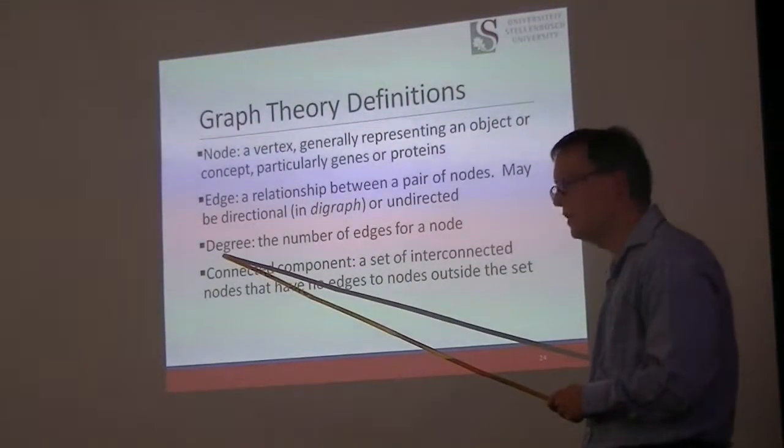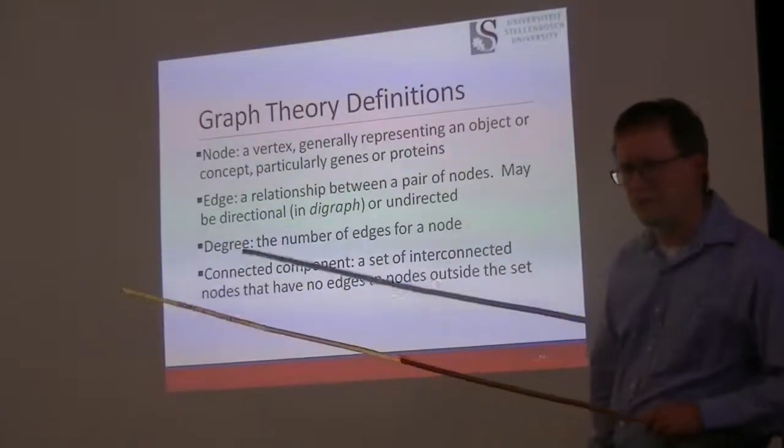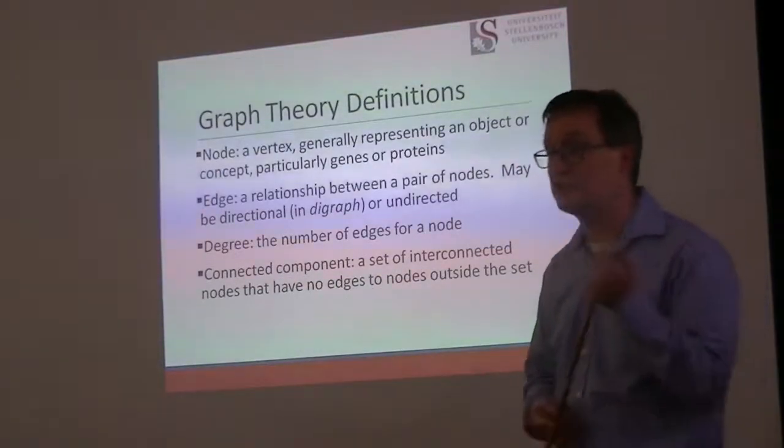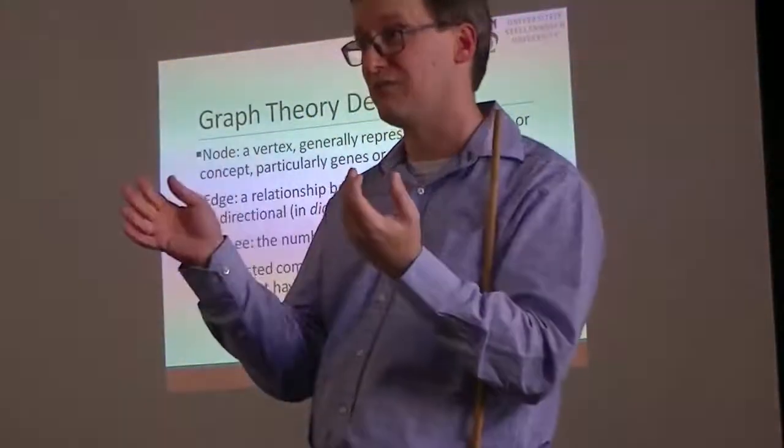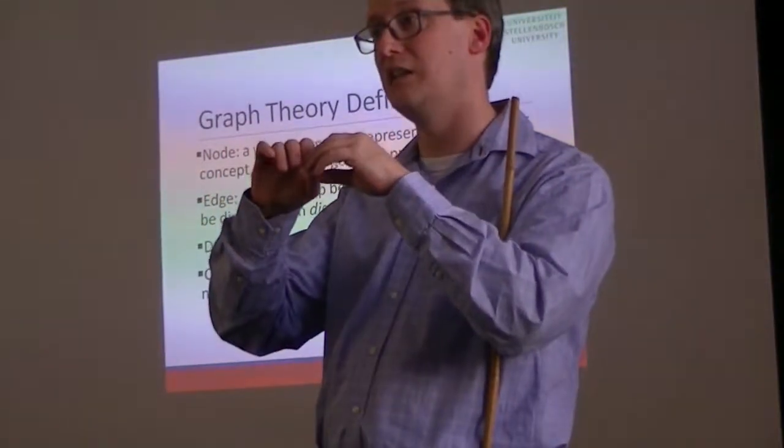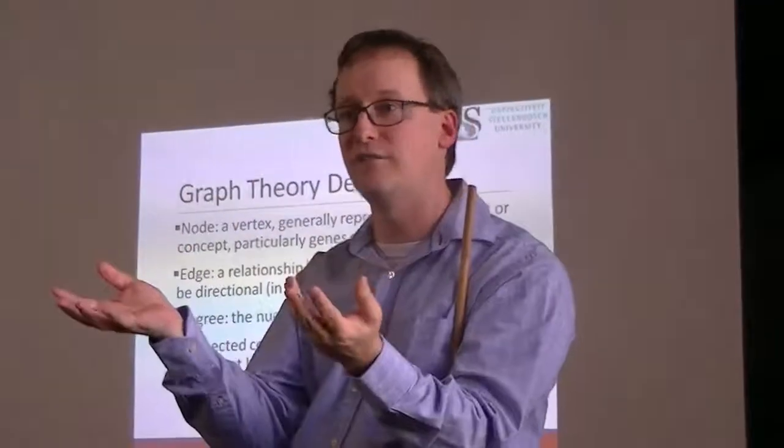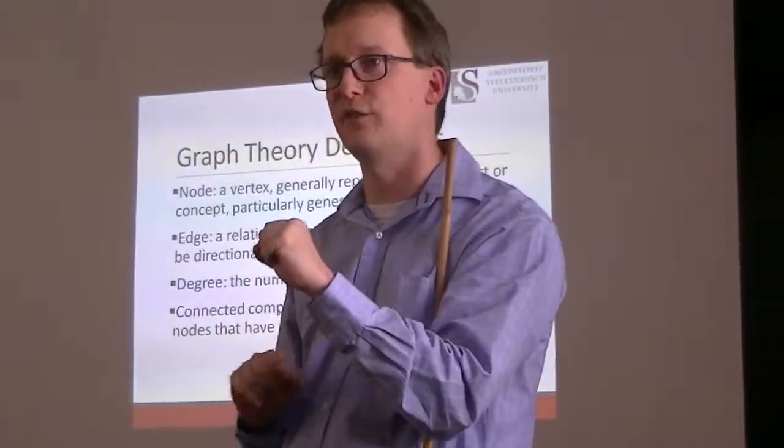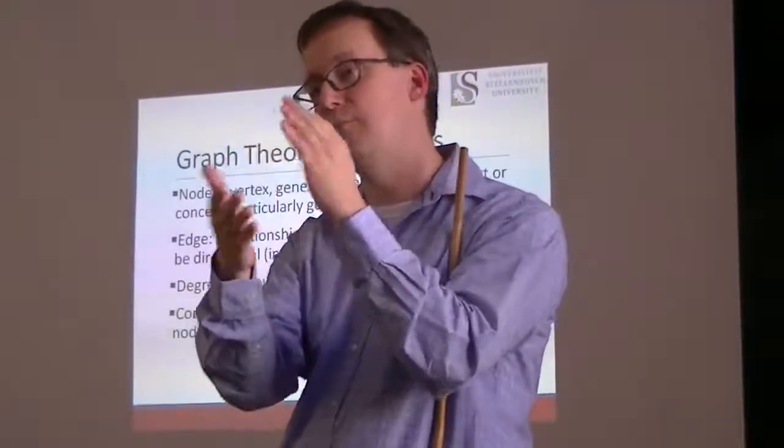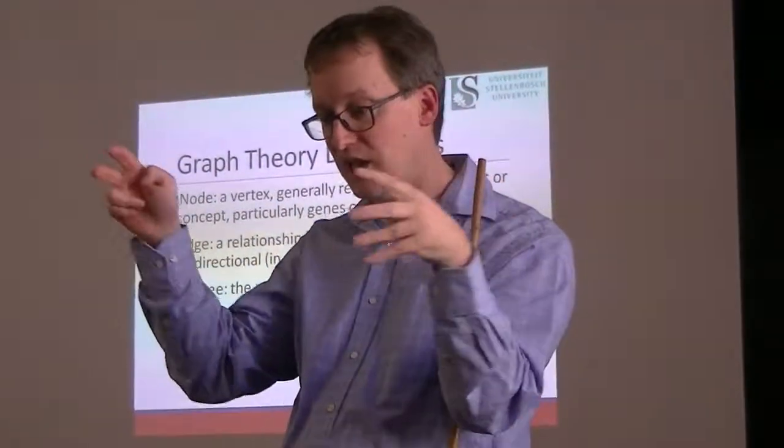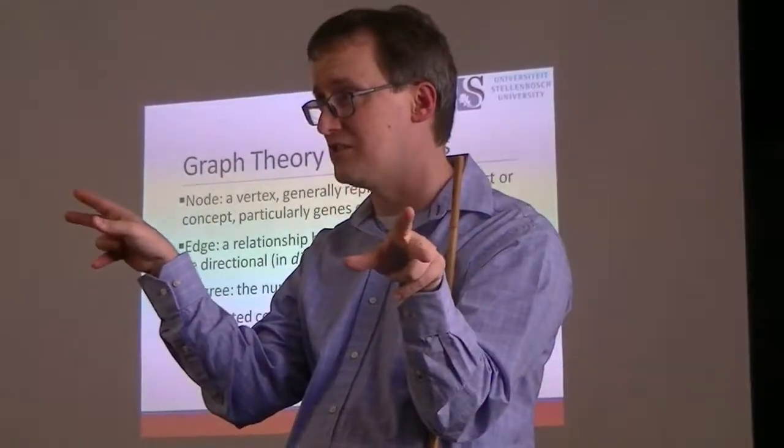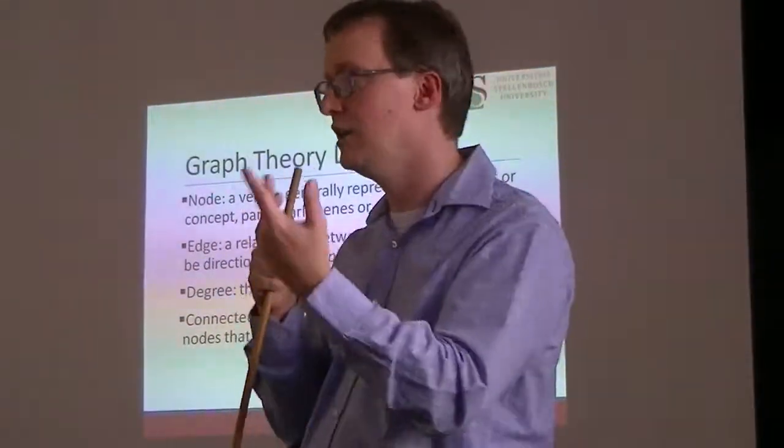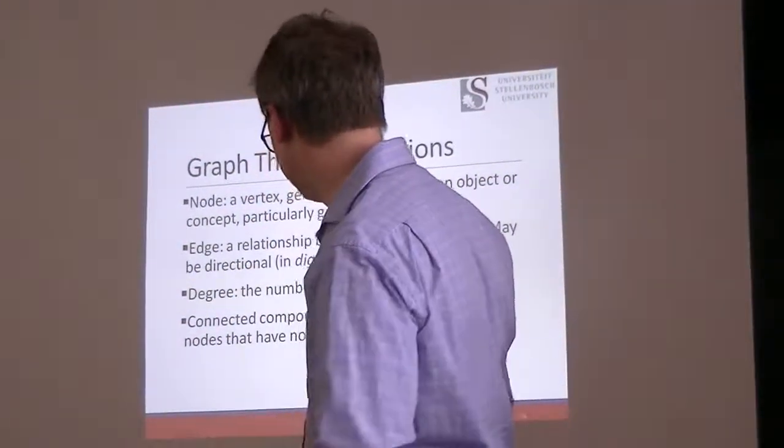When we use the name degree, this is one of these terms that always shows up when graph theory appears. We're asking how many different edges are associated with this node. We might have, in an undirected graph, we might just say there are five neighbors to this particular node. It's got five edges leading out of it to five different neighbors. You might subdivide that by saying there are this many incoming edges and this many outgoing edges as well. You would give those by the in-degree or the out-degree for that node.